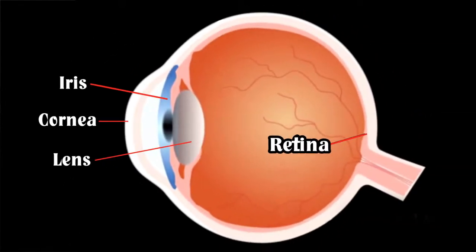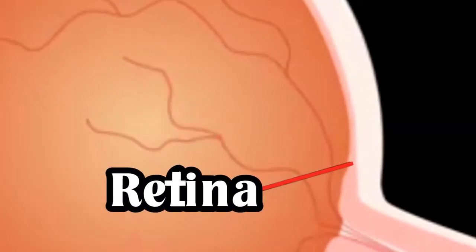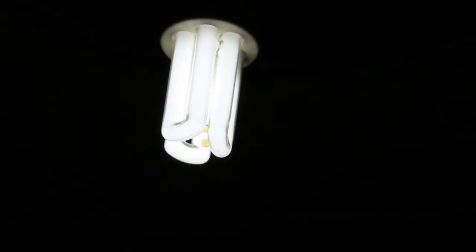And the retina is a network of cells, light sensitive cells, which carry a signal to the brain and the image is formed in the brain and we understand what we've seen. We often assume all of the light around us is the same, but some of the light we see is special.